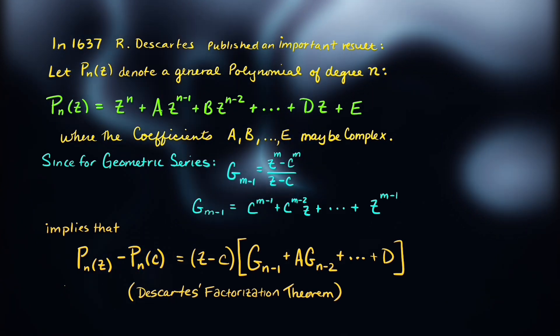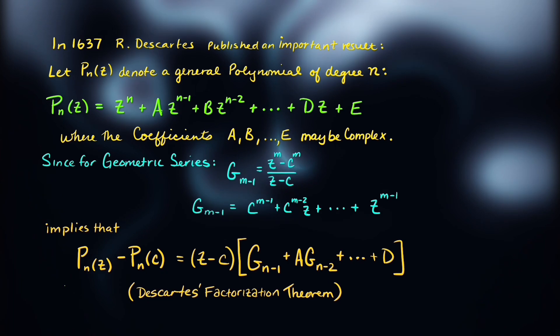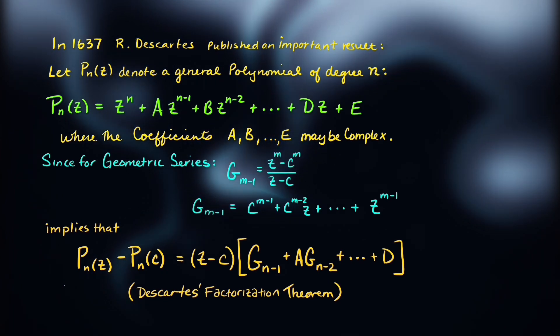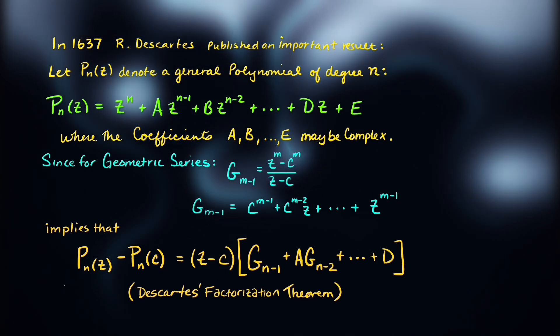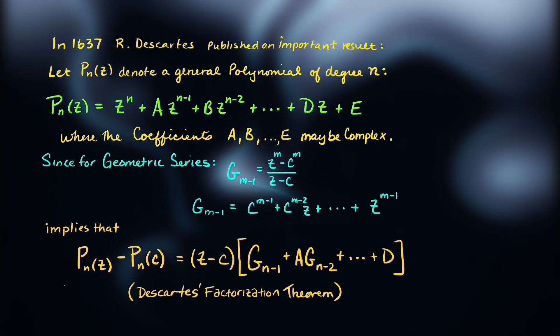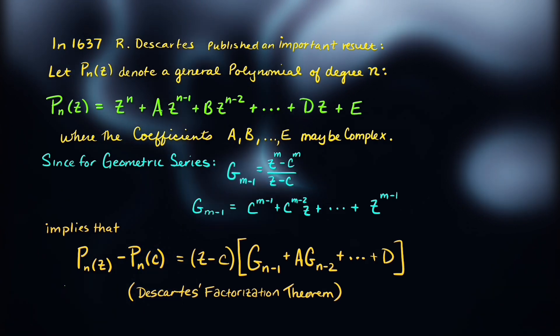And during his publication, he would use geometric series to argue for the factorization theorem of polynomials. This would then lay the groundwork for Gauss to later develop this theorem.